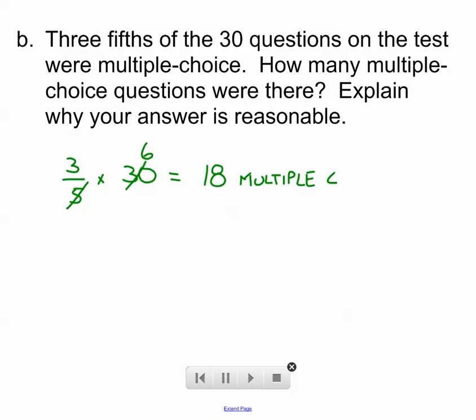Now we're also asked to explain why our answer is reasonable. There's several ways we could do that, but I would say that 3 fifths is a little bit more than half of the questions that are multiple choice. And I would say that 18 is a little bit more than half of the 30 questions that are multiple choice. There's one way to look at it.